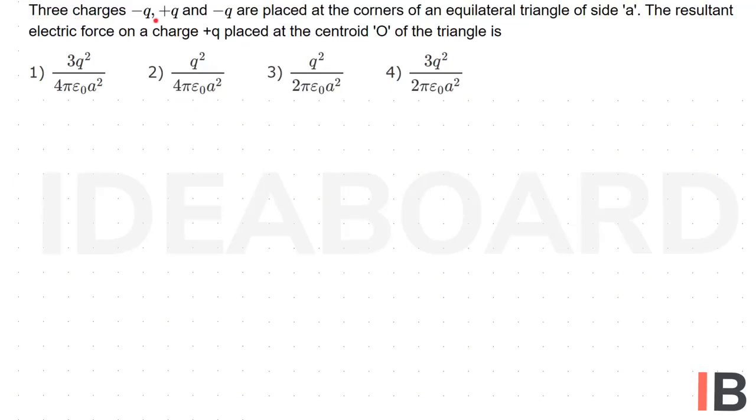Three charges, minus Q, plus Q and minus Q are placed at the corners of an equilateral triangle of side A. The resultant electric force on a charge plus Q placed at the centroid of the triangle is.